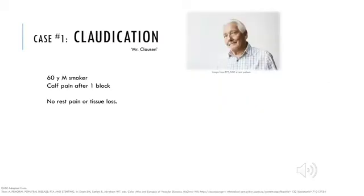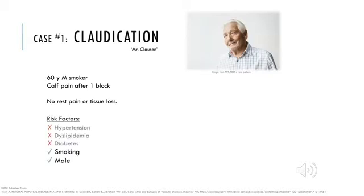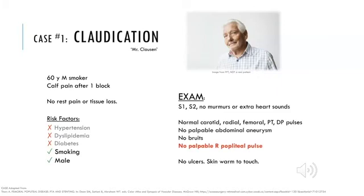Imagine you're seeing Mr. Clausen, a 60-year-old male referred to vascular surgery for a one-year history of right calf pain. After around one block, he has to slow down or stop walking because his right calf cramps up. He denies any rest pain or non-healing wounds. He has a 40-pack year smoking history. On exam, you assess all his pulses and listen for bruits. Both legs are warm to the touch, he has no ulcers, and all pulses are palpable except for the right popliteal.